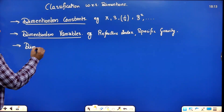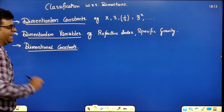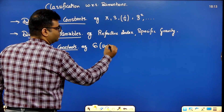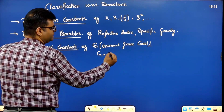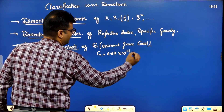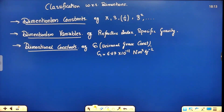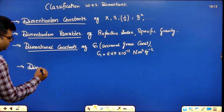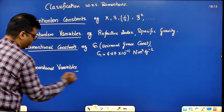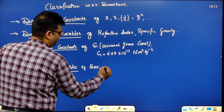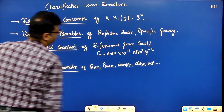Third: dimensional constants — constants that have dimensions, like universal gravitational constant G, whose value is fixed at 6.67 × 10⁻¹¹ N·m²·kg⁻². It has dimensions and a fixed value. Fourth: dimensional variables — all other physical quantities that have dimensions and variable values, like force, power, energy, displacement, velocity, etc.